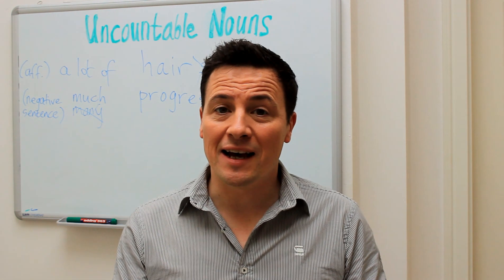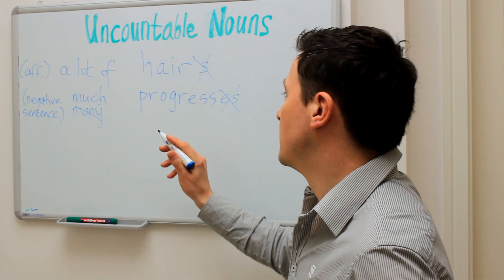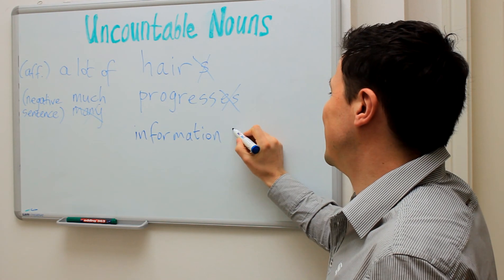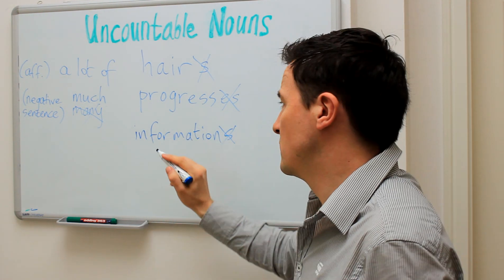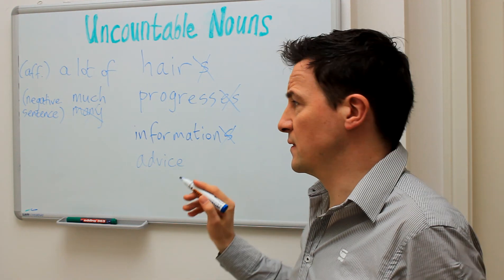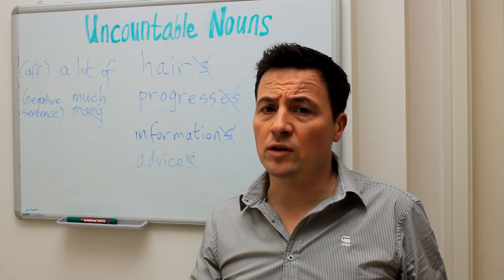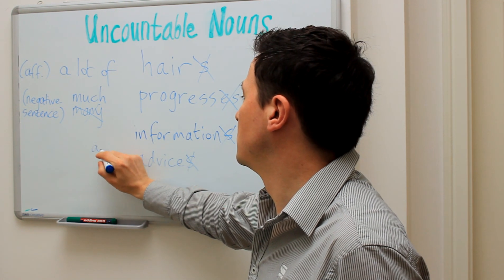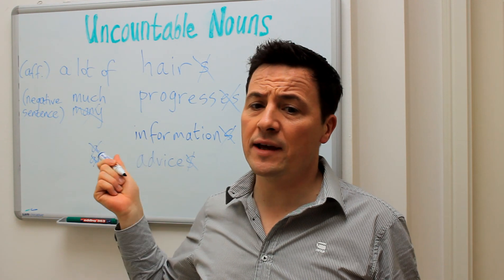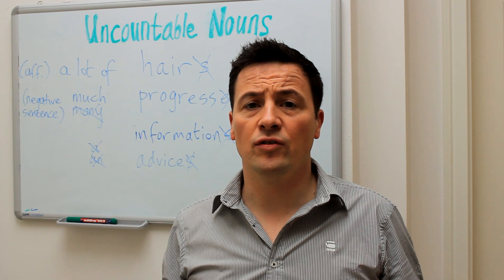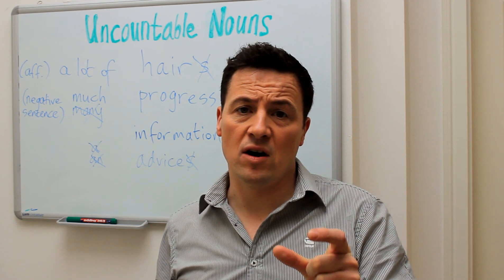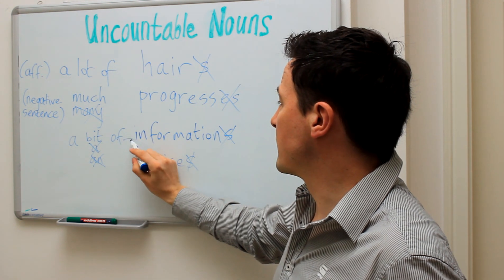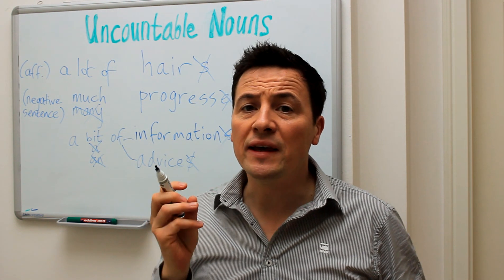Information and advice are also uncountable in English. We say 'information' not 'informations,' and 'advice' not 'advices.' Because they're uncountable, you also cannot say 'an information' or 'an advice.' If you want to make these words singular, use a phrase like 'a bit of information,' 'a bit of advice,' or 'a piece of advice.'